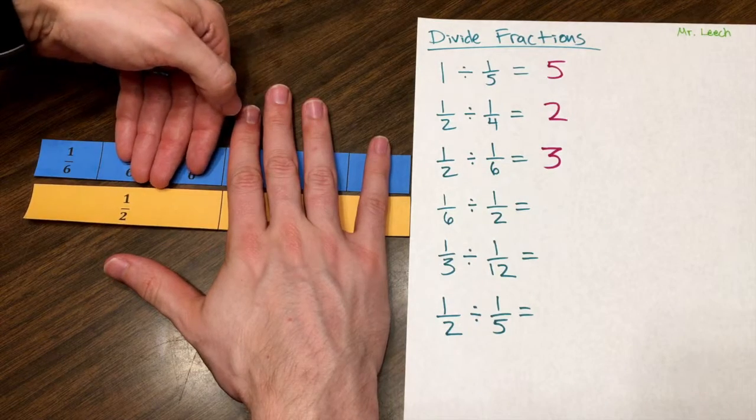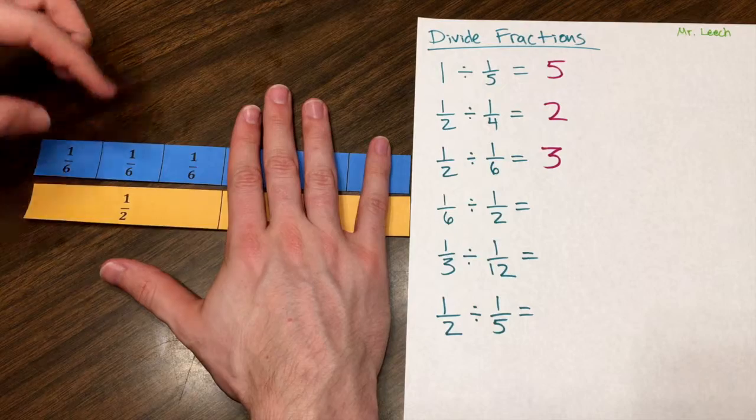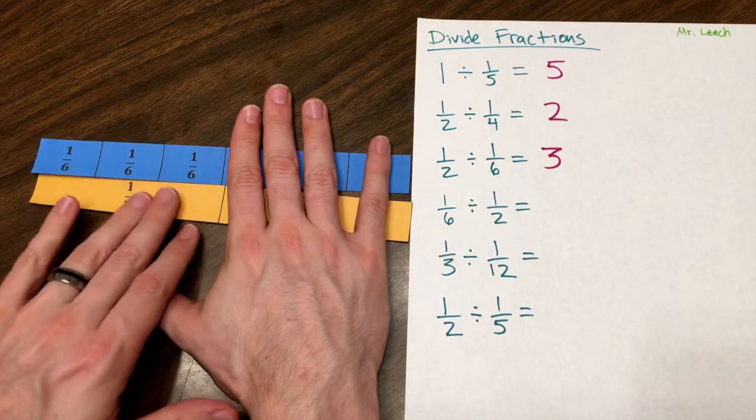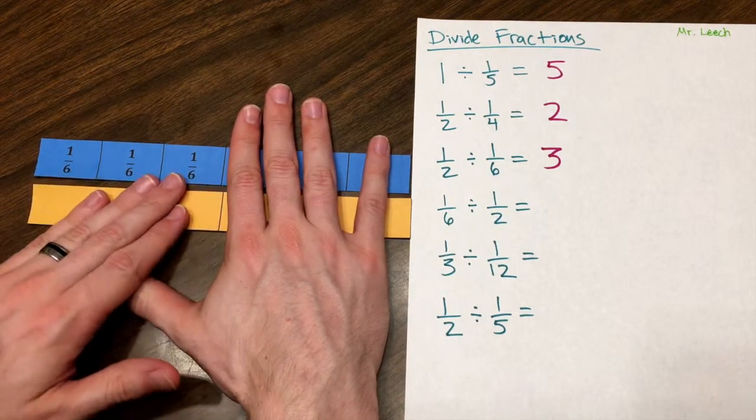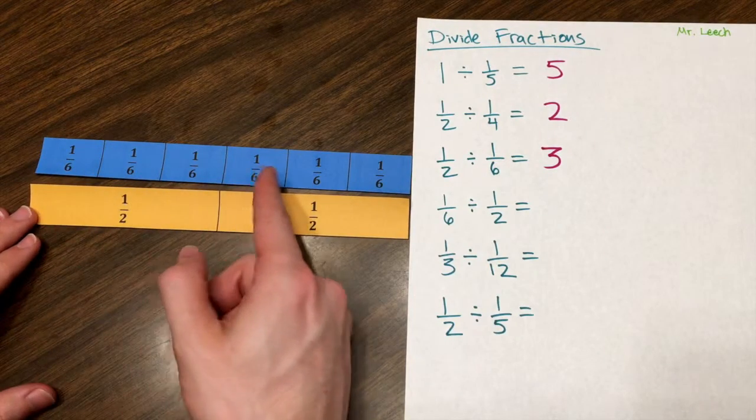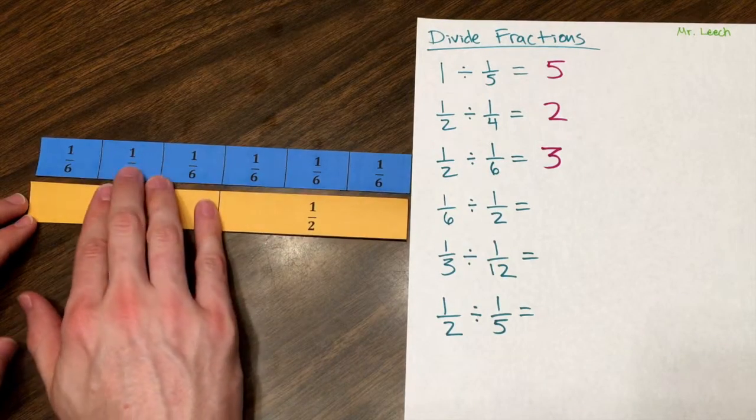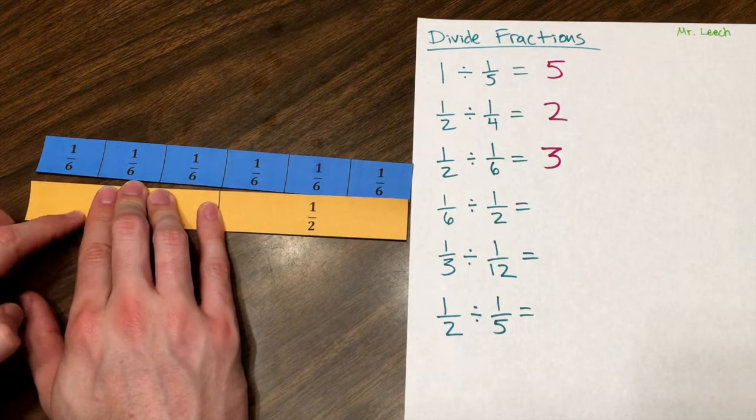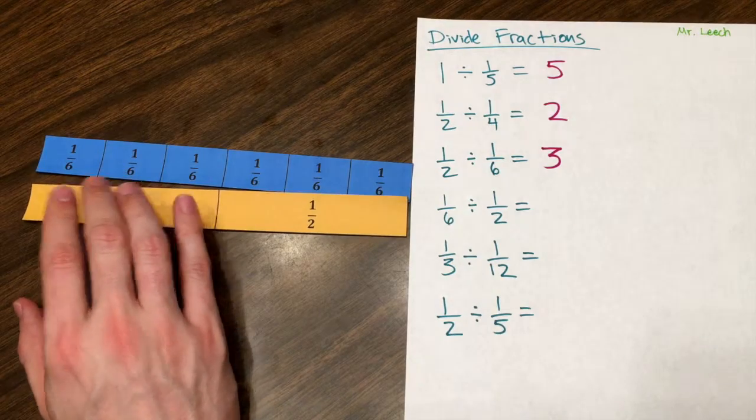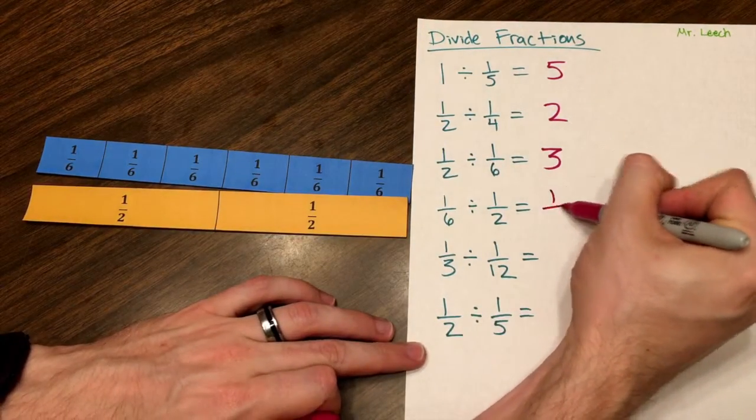But what amount of a half can I fit into a sixth? Well not a half of a half, but a third of a half. If I cut this one-half into three equal spaces, like we see this one-sixth is, I can cut this one-half into a third of itself, and that would give me one-sixth. So that means that one-sixth divided by one-half is one-third.